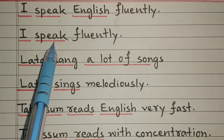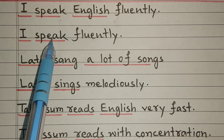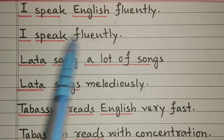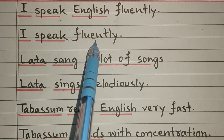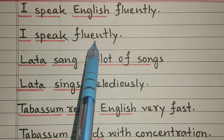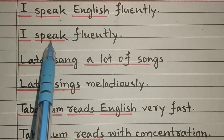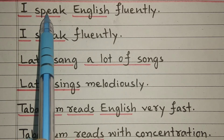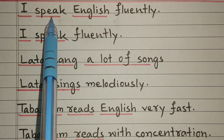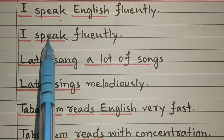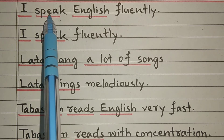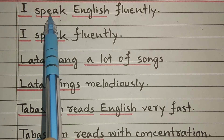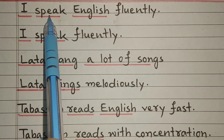Yahan par: I speak fluently — I speak, ravani ke saath baat karta hai. Yahan par object ki zaroorat nahi padti. Dono words ek hi — lekin yahan par transitive verb, yahan par intransitive verb. Speak — it is a transitive verb as well as intransitive verb.